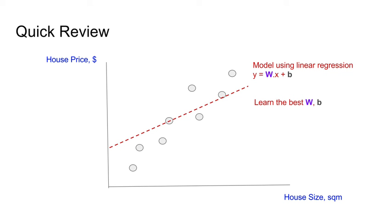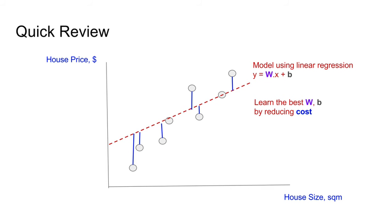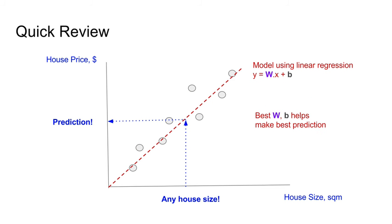We tweak the values of W and b in order to find the best linear model that can fit our data. The best fit is defined as a model that can reduce the cost, which is the sum of the blue lines — the difference between the actual data points versus the prediction values. With a good fit, we can now give a good prediction of the house price given any house size.